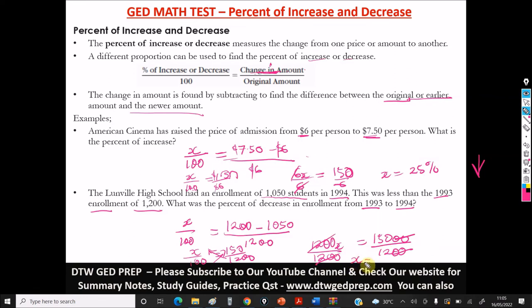This will cancel here. We're left with X is equal to 150 divided by 12. We're going to have a 12.5%. We're looking for the percentage. So the unit of measurement will be what percent? So the percent of decrease from 1993 to 1994 is what? A 12.5% decrease.